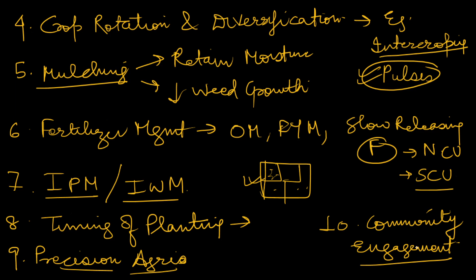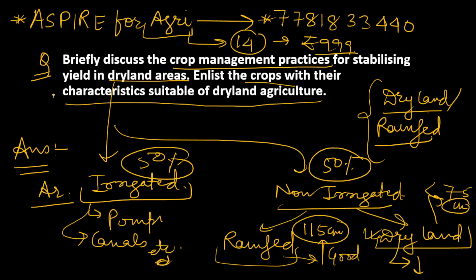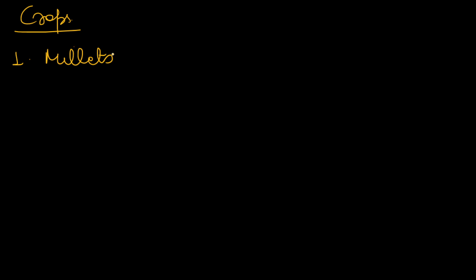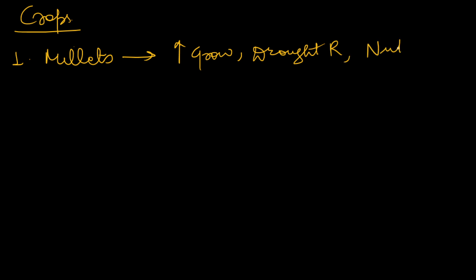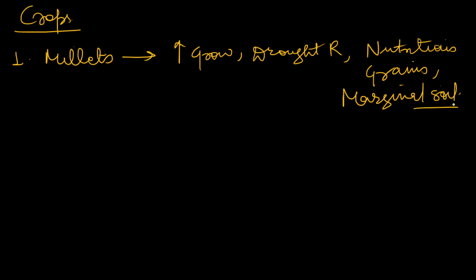Now let's move to the second part: crops suitable for dryland areas and their characteristics. First, obviously, we have millets — including sorghum, bajra, and other types. Their characteristics are that they are quick growing, drought resistant, provide nutritious grains, and can be grown in marginal soils. These characteristics make millets a very good crop for dryland areas.